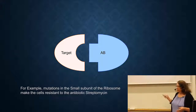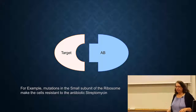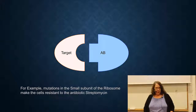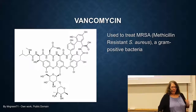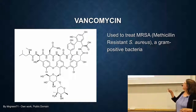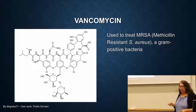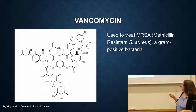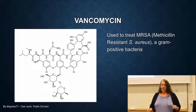An example of this are mutations in the ribosome that make the cell resistant to the antibiotic streptomycin. Another drug is called vancomycin — it uses this kind of mechanism. Vancomycin is a very complex molecule used to treat MRSA, which is Staphylococcus aureus that is already resistant to methicillin, the most common antibiotic used for Staphylococcus aureus. These are a big problem, and vancomycin is what is used to treat them. Vancomycin resistance is now seen and growing.